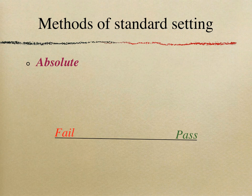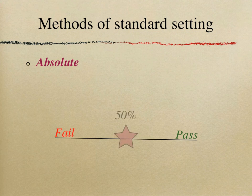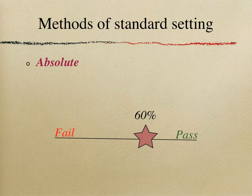In an exam situation, as discussed previously, you would like the competent students to pass and those who are incompetent to stay behind. The question would be: where would you like to place your pass mark? Would you like it to be 50% or would you like to move it to 60%? And why 50%, why 60% — why not 62% or 56%?